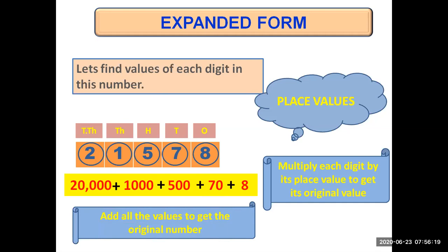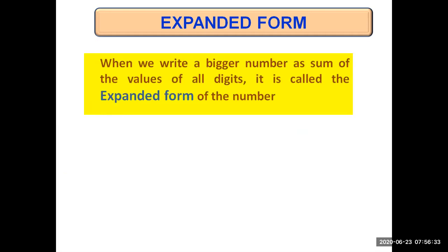This yellow strip in which all the values are written as a sum is known as the expanded form of the original number 21578. Expanded form is when we write a bigger number as a sum of the values of all digits. Writing a bigger number as sum of the values of all digits is called expanded form of the number.